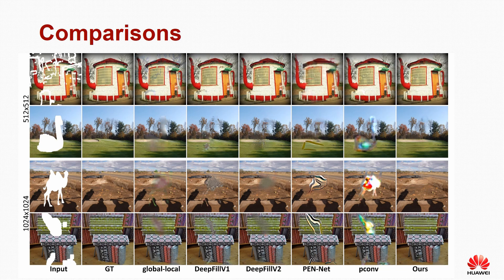When tested on small images where the hole size is not large, most neural models can achieve acceptable quality. However, if we increase the size of the hole or the size of the input image, the artifacts generated by other methods become severe, while our method performs consistently well.